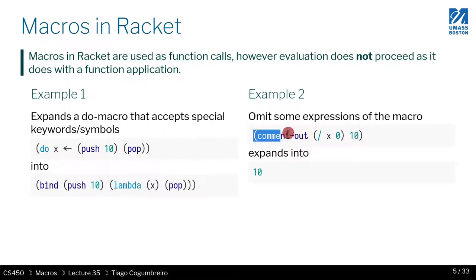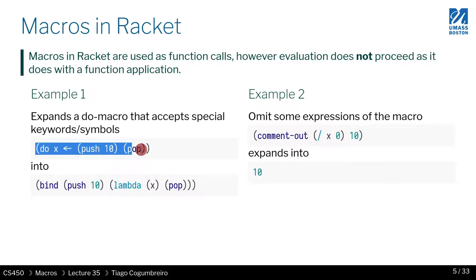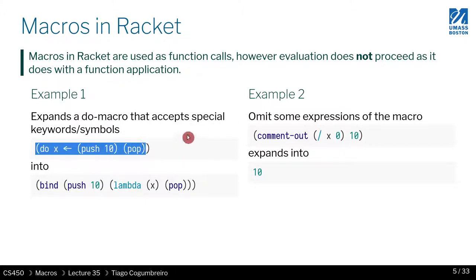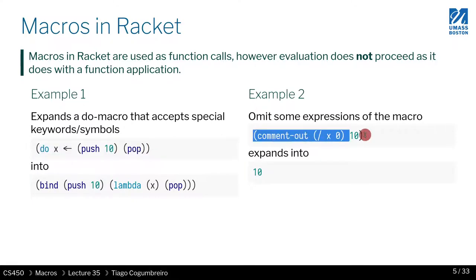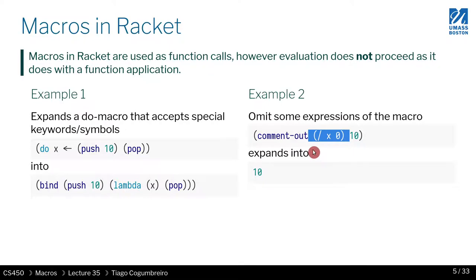Another example is you could define a macro that just discards some of its arguments. It kind of looks like a function call, but it's not — it's a bit more expressive. In this particular case, comment-out is removing or discarding an AST term, which means you would just return the second parameter, and whatever is here would be ignored. In particular, you see there's a division by zero that does not run.